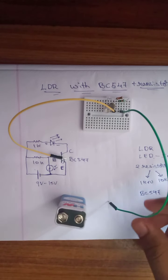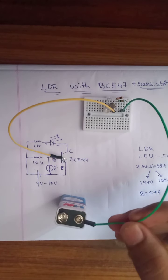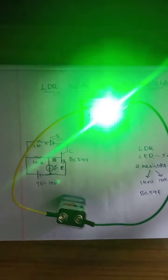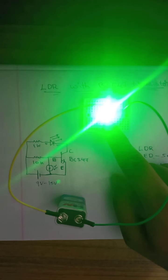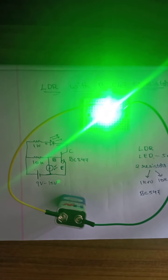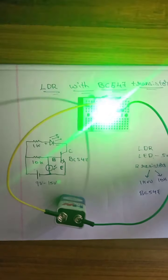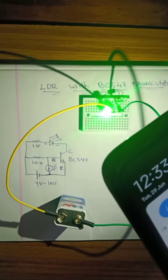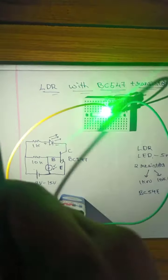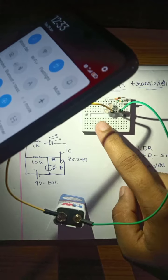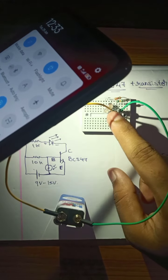Now coming to the output, positive is given to the positive and negative terminal to the battery. We observe that the LED glows. For deeper observation, let us glow a flashlight on the LDR.